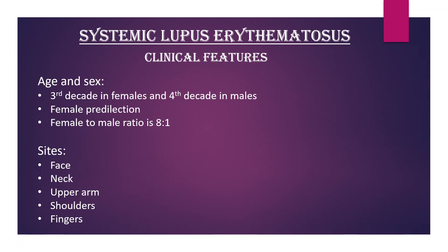Systemic Lupus erythematosus — clinical features. Age and sex: third decade in females, fourth decade in males. Female predilection; female to male ratio is 8 to 1. Common sites are face, neck, upper arm, shoulder, and fingers.